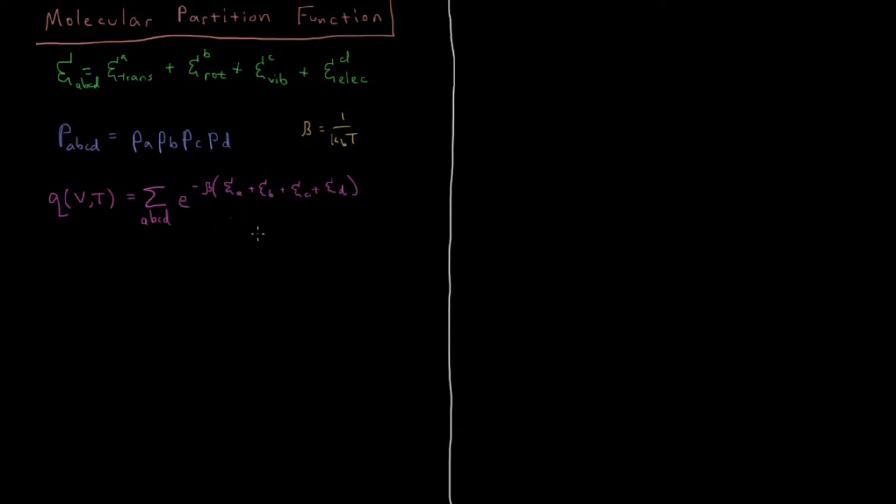Okay. But then, because of the way that exponents work, we can make this e to the minus beta ea, times e to the minus beta eb, times e to the minus beta ec, etc. We can factor out these exponents into separate e's.